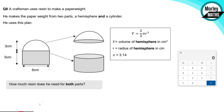For this final question, sometimes a formula is provided for unusual shapes. All the previous shapes you'd be expected to know from memory, but for weird shapes like a hemisphere it will give you a formula. A craftsman uses resin to make a paperweight from a hemisphere and a cylinder. We need to calculate the volume of each part and add them together.